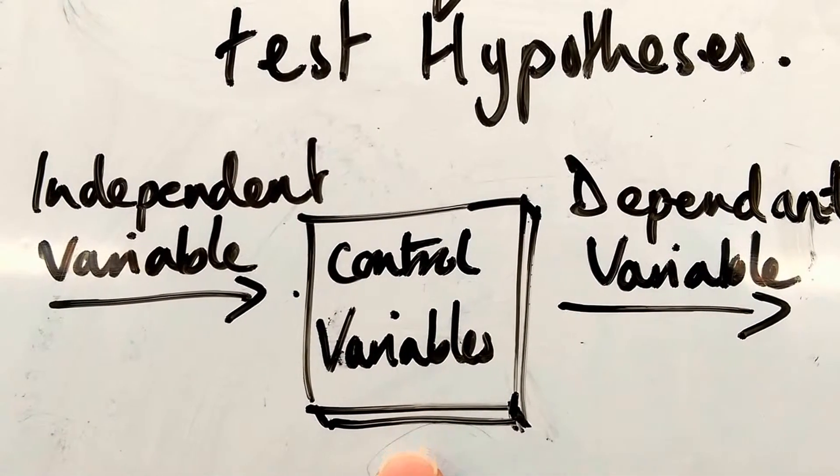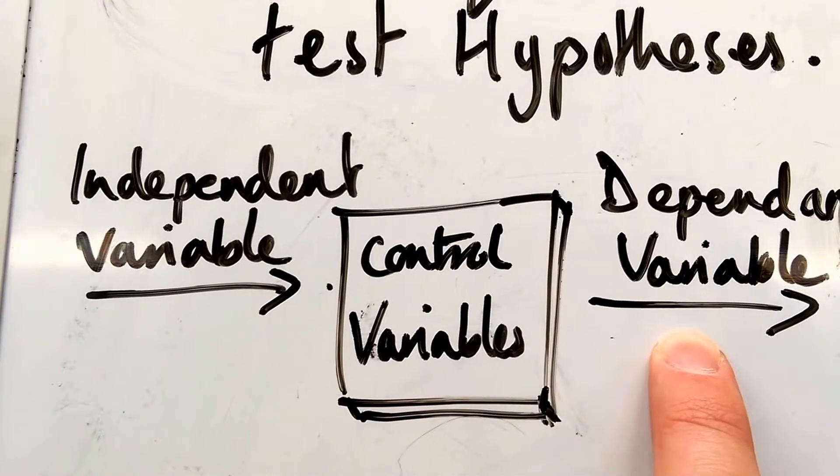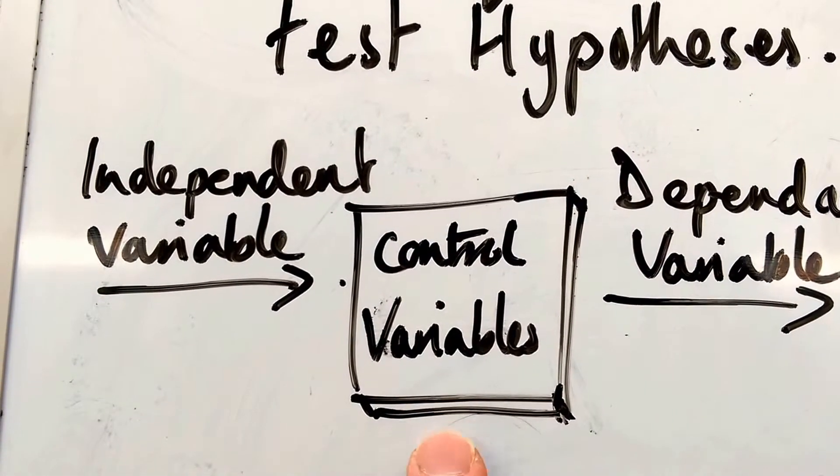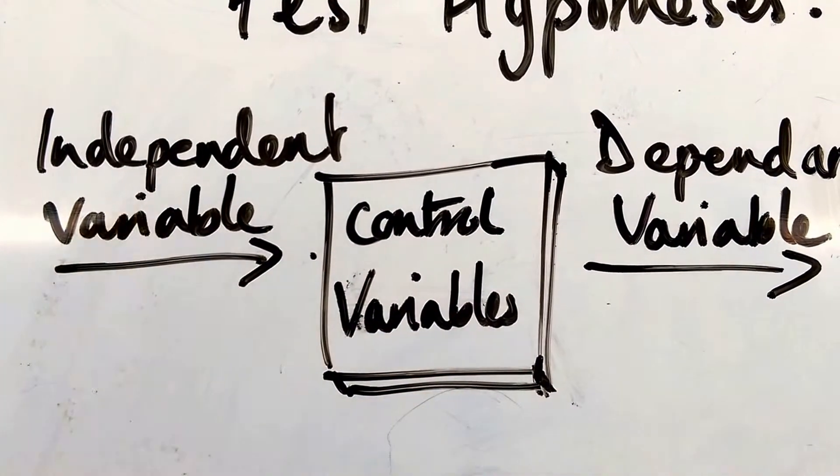The experiment has to do exactly the same thing to the independent variable every single time. So, in the middle there, in the experiment, keeping it exactly the same every time, is the control variables.